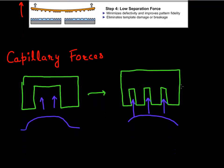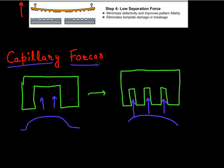So why does nano imprint work even better at the nanoscale? Because you have capillary forces which assist in the process. With a micron-sized feature you get limited capillary action pushing resist into the template, but with features of only a few nanometers you get much higher capillary action — since capillary action is inversely proportional to the size of the feature. So it's a beautiful technique that works even better at smaller features.